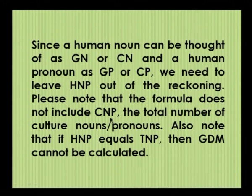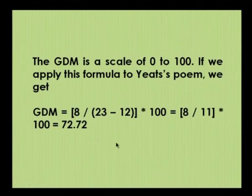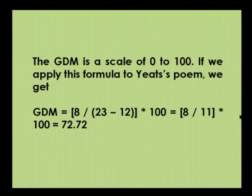Note that the formula does not include CNP — the total number of culture nouns or pronouns. Also note that if HNP equals TNP, then GDM cannot be calculated, because TNP minus HNP will equal zero, and anything divided by zero tends to infinity. The GDM is a scale of 0 to 100. Applying this formula to Yeats's poem: GDM = 8 ÷ (23 − 12) × 100 = 8 ÷ 11 × 100 = 72.72. That is the green density measure of Yeats's poem.